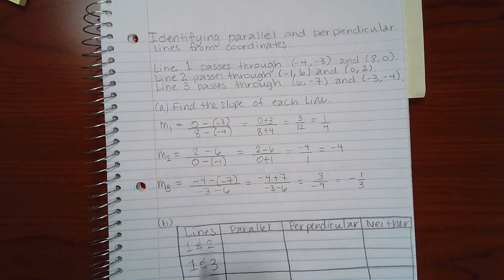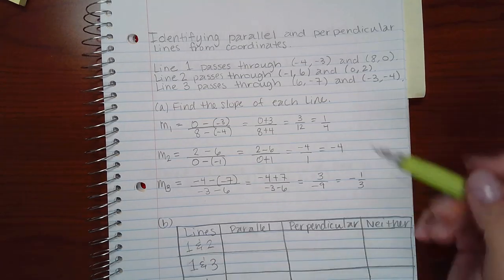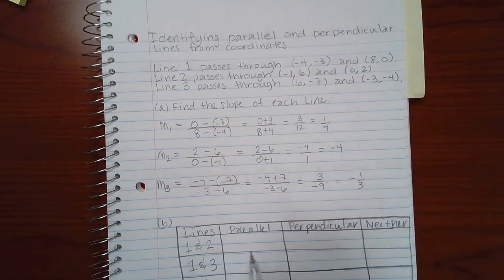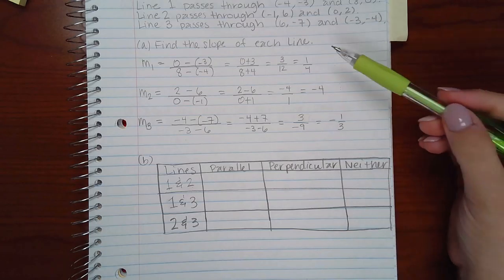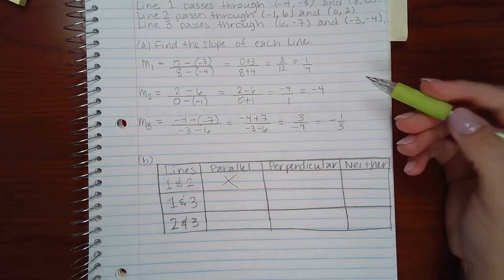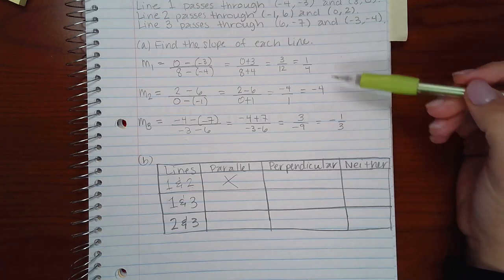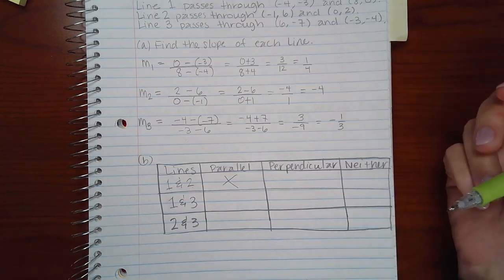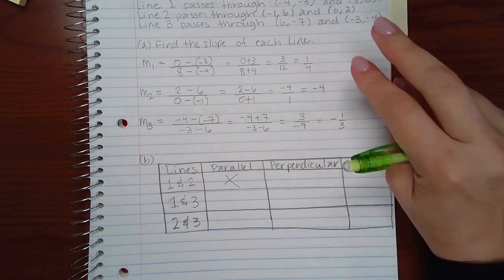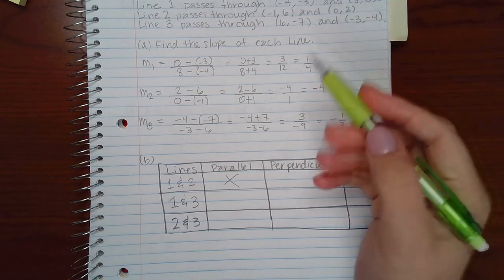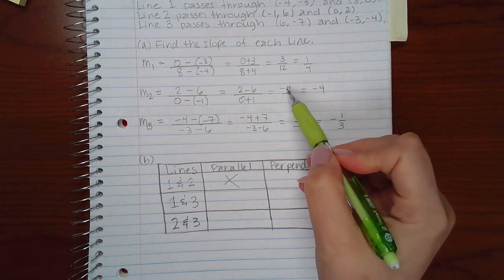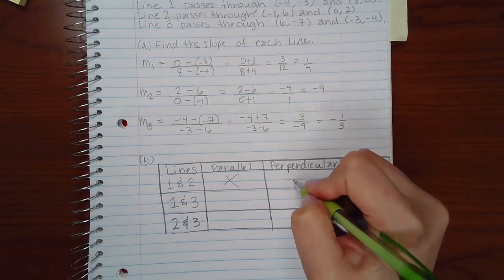Now we start comparing lines one and two. In order for them to be parallel, they would have to be exactly the same, and they're not. So they're not parallel. In order for them to be perpendicular, you can think of it as they are opposite reciprocals of one another. So this one's positive, this one's negative. This is one over four, this is four over one. So these guys are perpendicular.